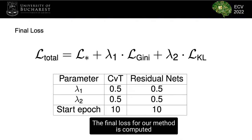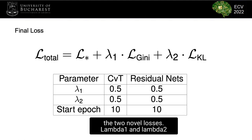The final loss for our method is computed by summing the initial loss L-star with the two novel losses. Lambda1 and Lambda2 control the importance of these terms.